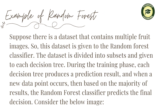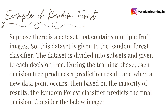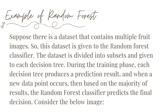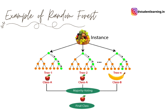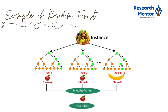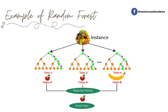As an example of random forest: suppose there is a dataset containing multiple fruit images — a big basket. This dataset is given to the random forest classifier. The dataset is divided into subsets and given to each decision tree. During the training phase, each decision tree produces a prediction result, and when a new data point occurs, the random forest classifier predicts a final decision based on the majority result. In this diagram, the basket is divided into multiple trees — tree one, tree two, up to tree N. Trees one and two predict apple while tree N predicts banana. Since the majority of trees show apple, the final decision is apple.